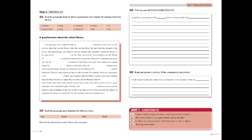Unit 1 ends with an assignment. The student goes back to their Task 1 mind map, chooses a different place, makes a new questionnaire, conducts it with people around the school, analyses the results, and writes it up for homework.